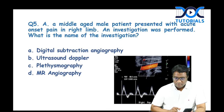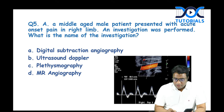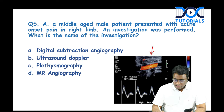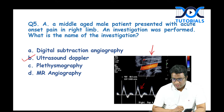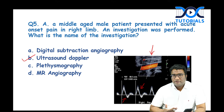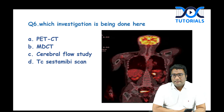Another question: a middle-aged male with acute onset pain in the right limb — an investigation was performed showing a color Doppler image with a spectral wave pattern. A triphasic wave pattern is seen in peripheral arteries and a monophasic pattern in venous Doppler. This is ultrasound Doppler imaging.